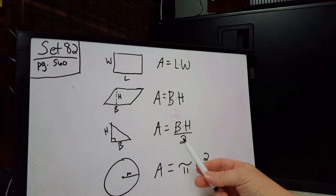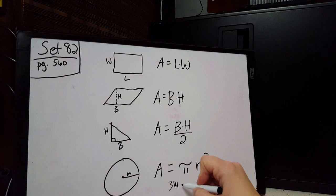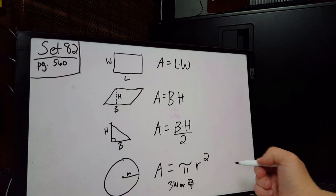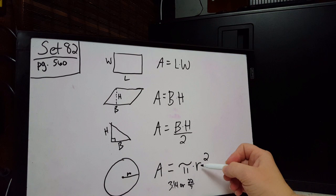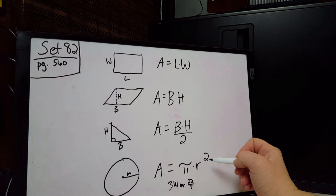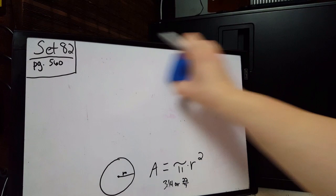Now we are looking at the area of a circle. The formula we need to learn is pi times the radius squared. Pi can be represented as 3.14 or as 22 over 7, and usually the book will tell you which to use. The radius squared means the radius times the radius — not the radius times two.